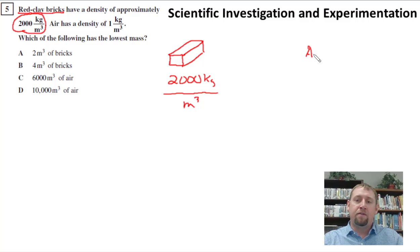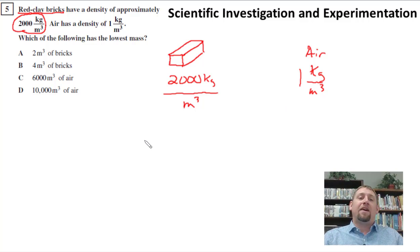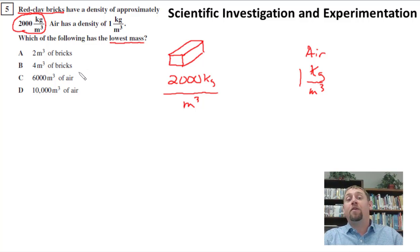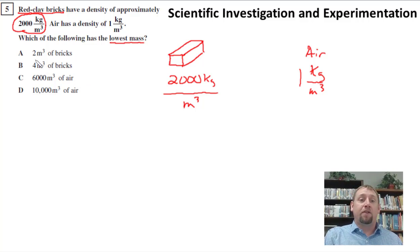Air, on the other hand, has a density of one kilogram per meter cubed — not very dense, air is very light. I'm sensing a trick question here. Remember, this is test prep. So which of the following has the lowest mass? It's going to give us four options, and they're going to immediately get you to think that some volume of air has the lowest mass. I'm here to tell you that it may not be that way, so let's see what we have.